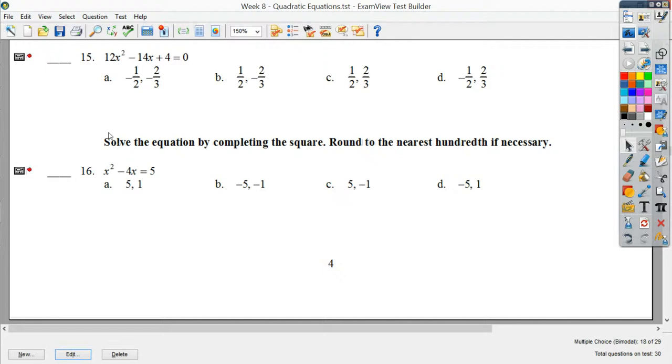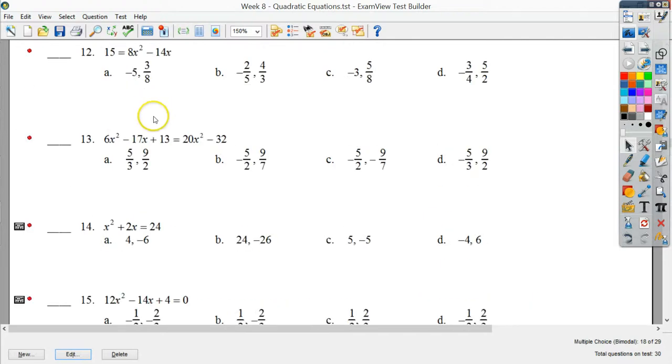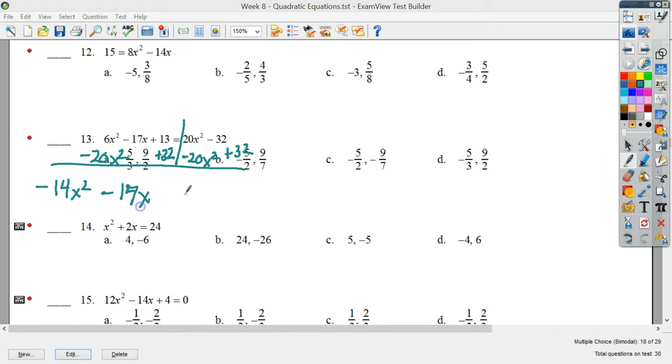if I had to do number 13, well, I'd still want to get everything over. I'd draw the line. I'd subtract 20x squared. Ended up with negative 14x squared. And then I'd have to move minus 32 over. So I'd add it. I'm going to do two steps in one, which is a really bad strategy. Don't do this on your own. I'm just space reasons. I'm going to do it. 32 plus 13 gives me 45.